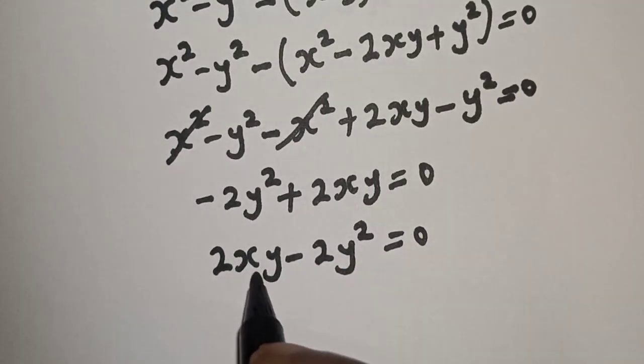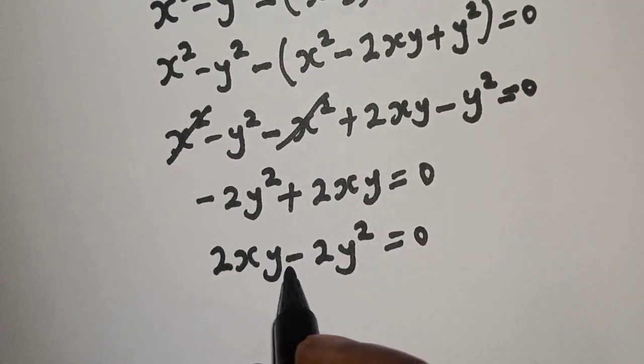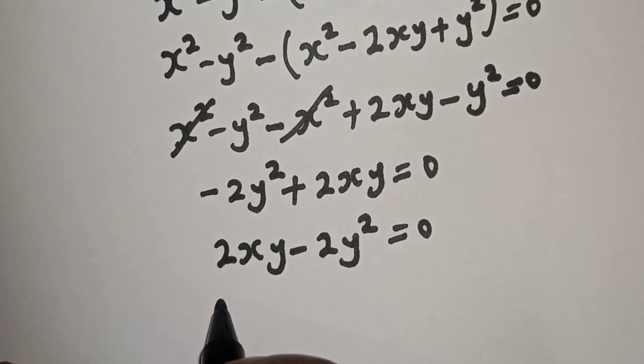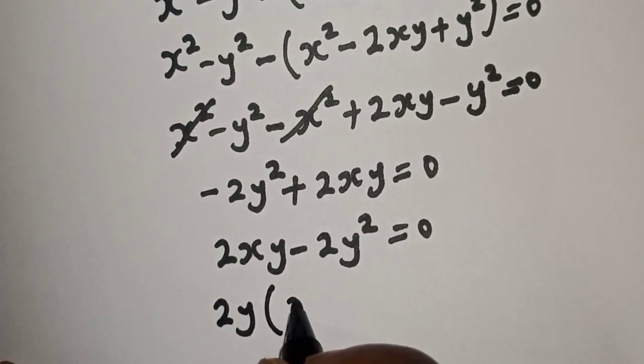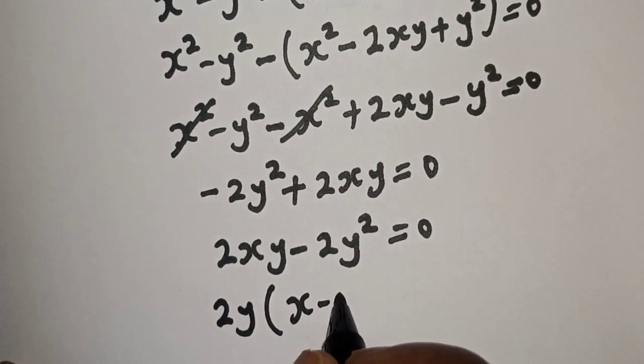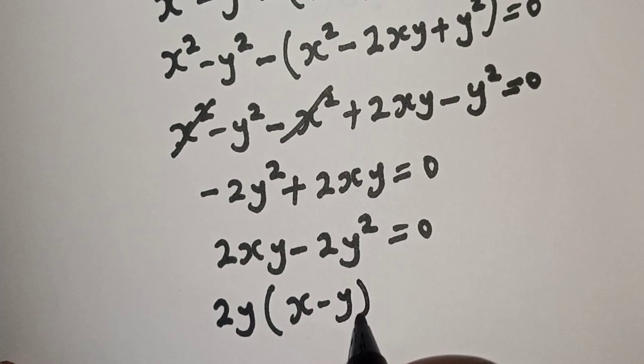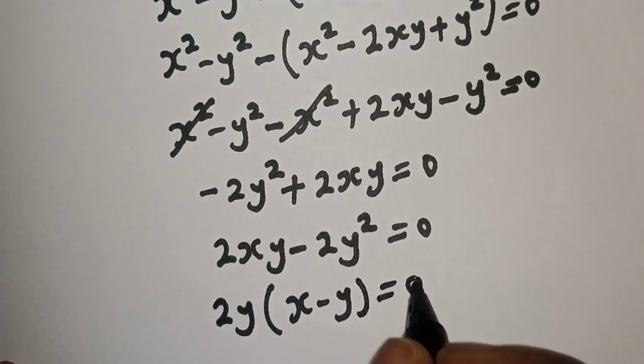Let's see — something is common here. 2y is common, so we factor out: 2y times (x minus y) is equal to 0.